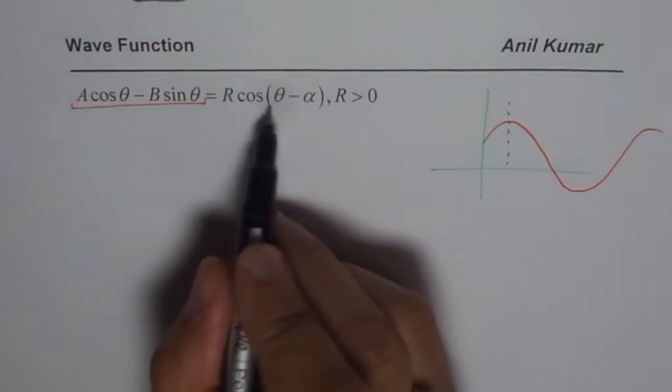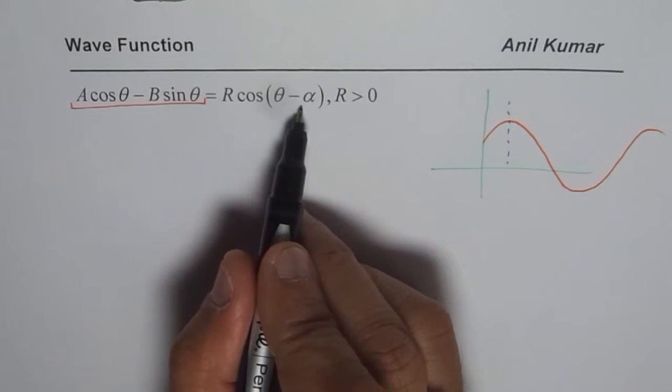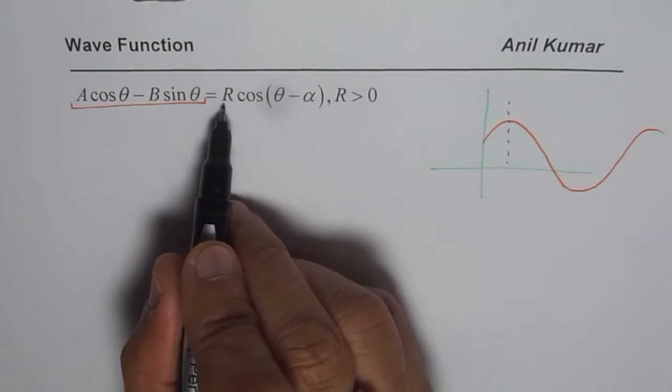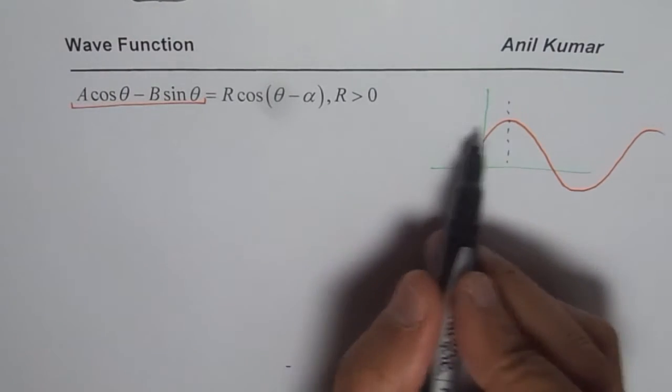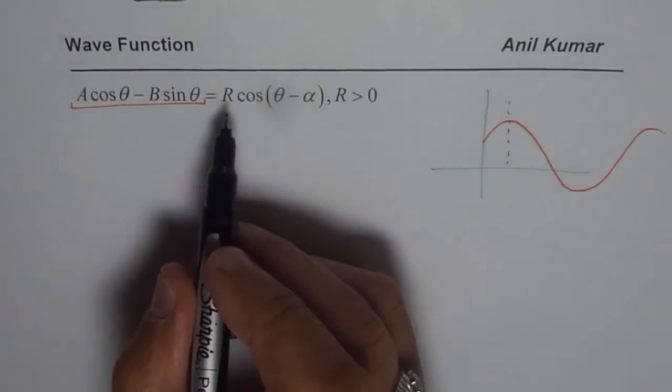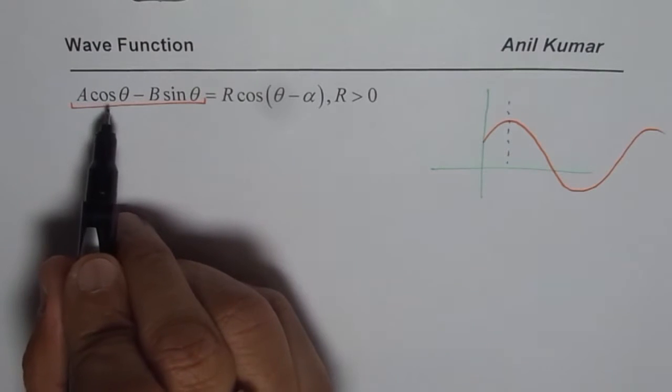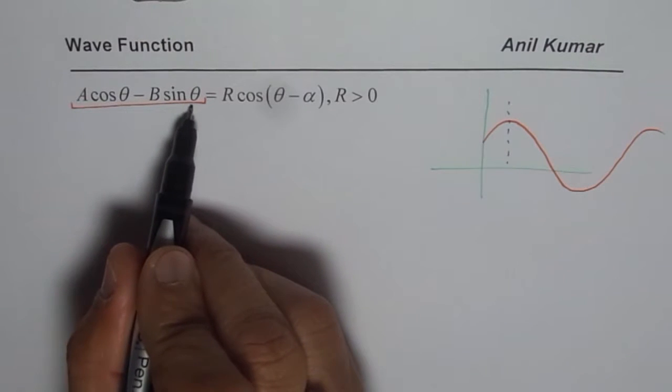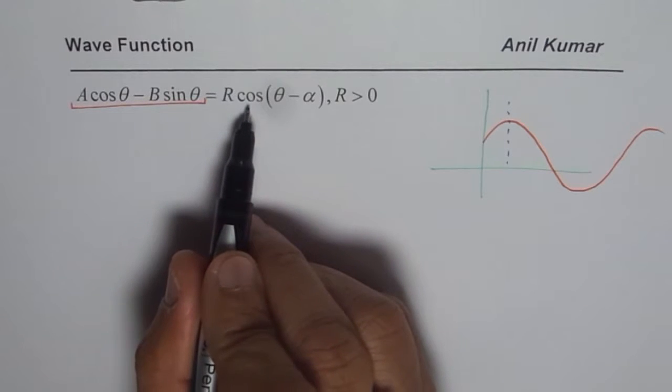That is the utility with R cos(θ - α) type of an equation where R becomes stretch factor and α is translation horizontal. Now let us understand how to relate these two things: an equation which is combination of sine and cosine with another equation which is cosine function.